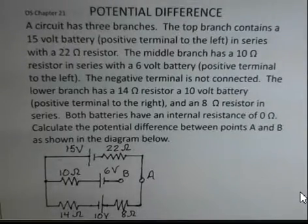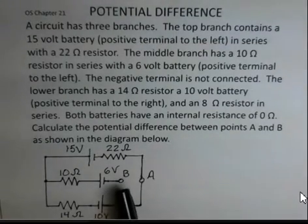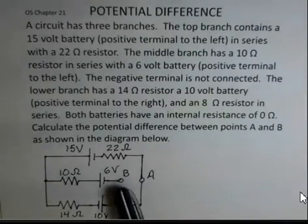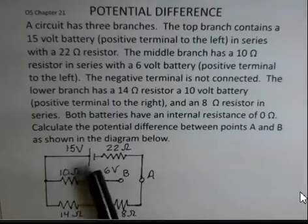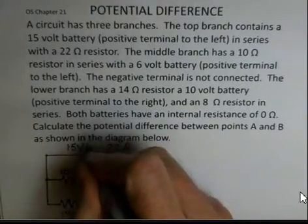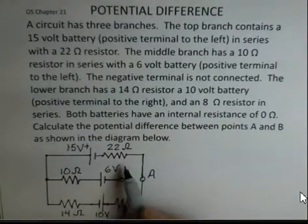This video deals with the battery and resistor circuit, and we're interested in what is the potential difference between point A and point B in this circuit. It is open — there is no wire between point B and point A. We have three branches in the circuit, and the top branch has a 15-volt battery, where the longest line represents the positive pole, and a 22-ohm resistor in series.